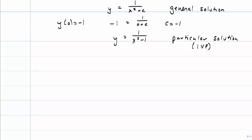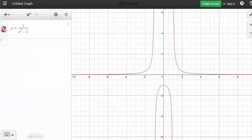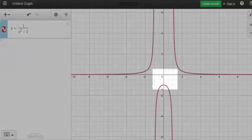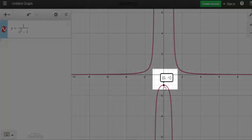Now what I want to do is graph that solution, and I graph this using Desmos. So you notice there are two vertical asymptotes, and my initial condition falls right there at zero comma negative 1.